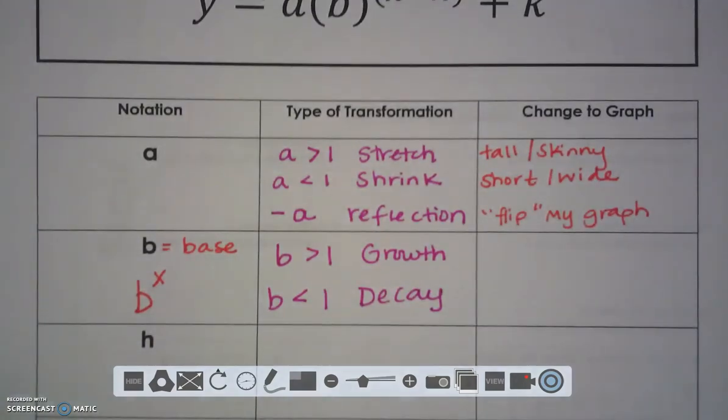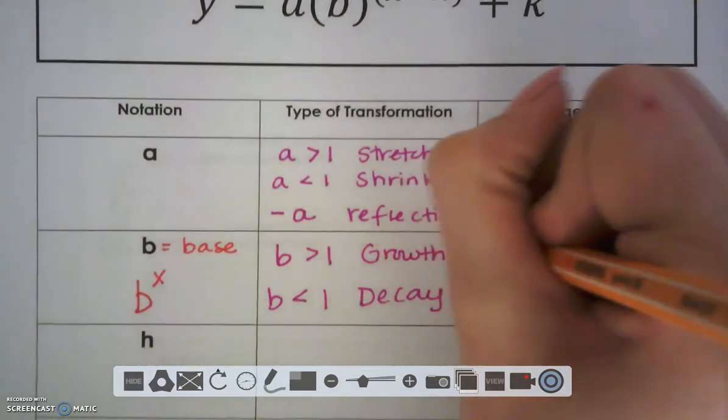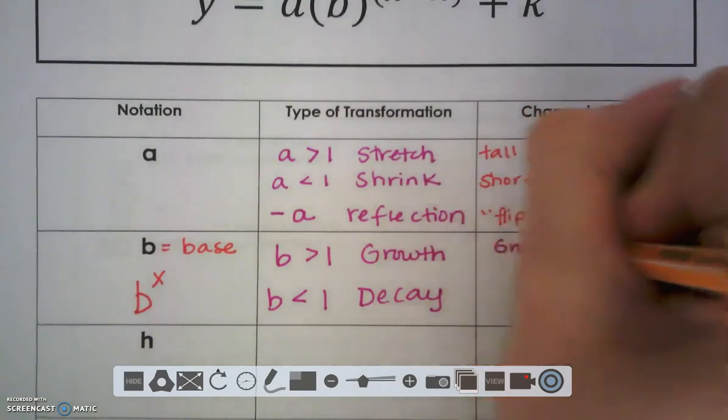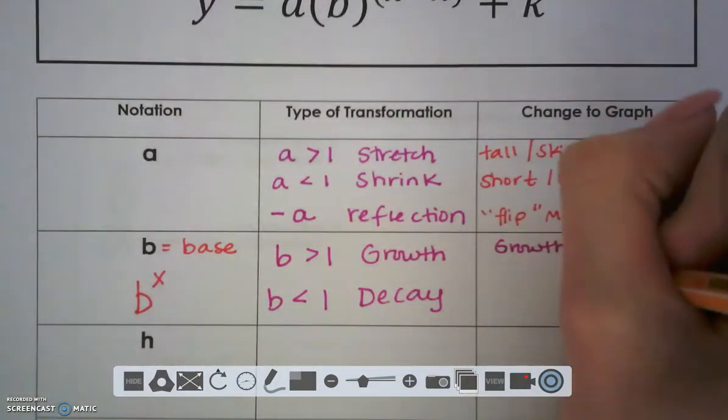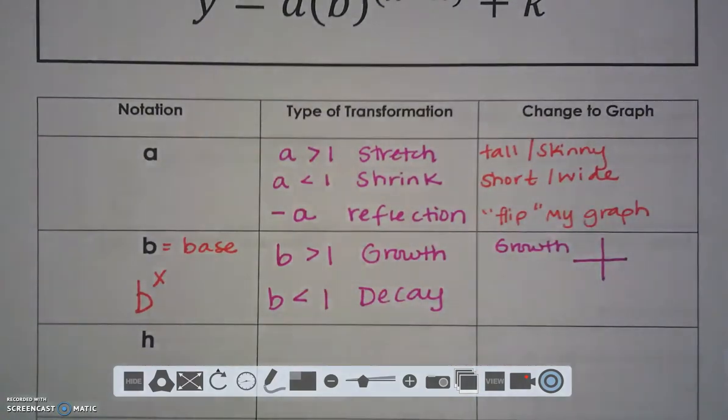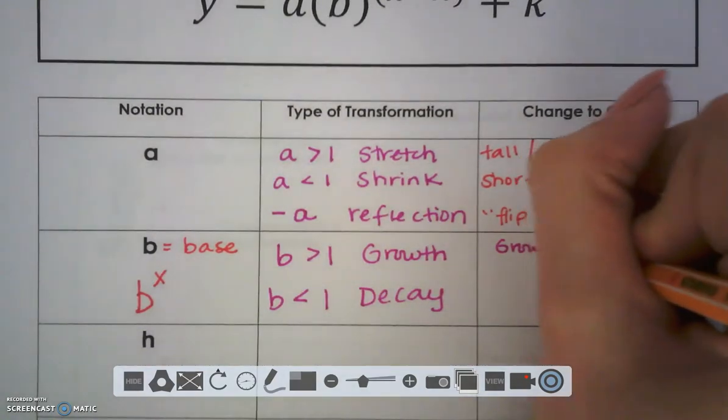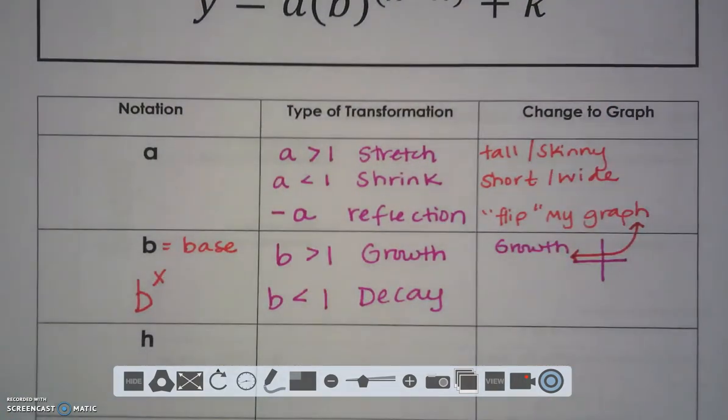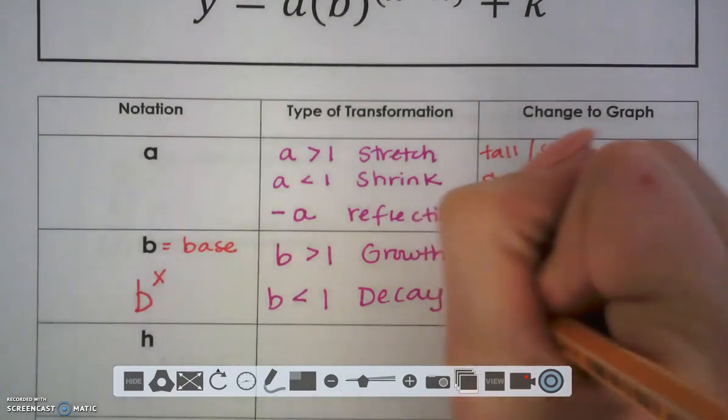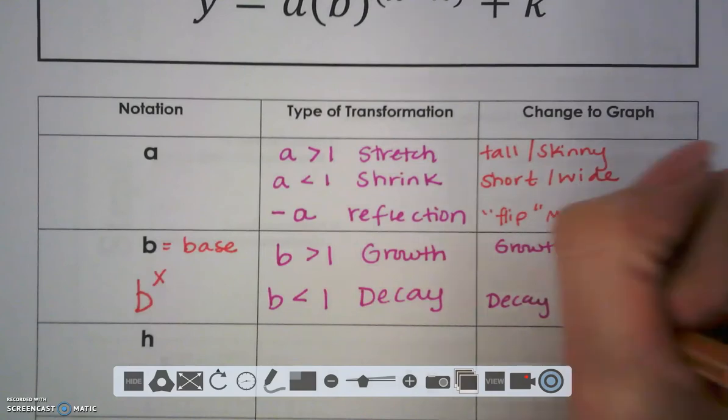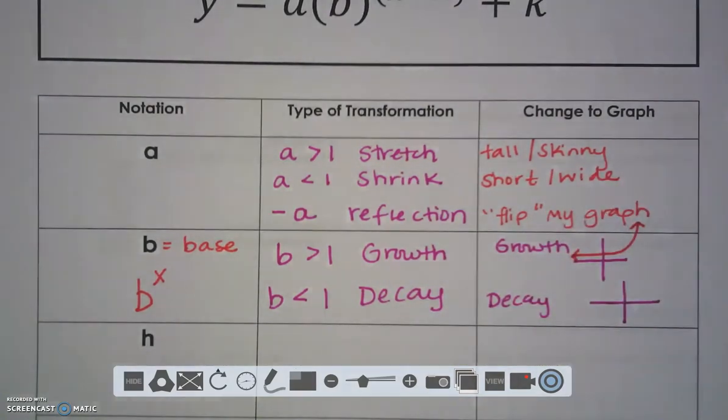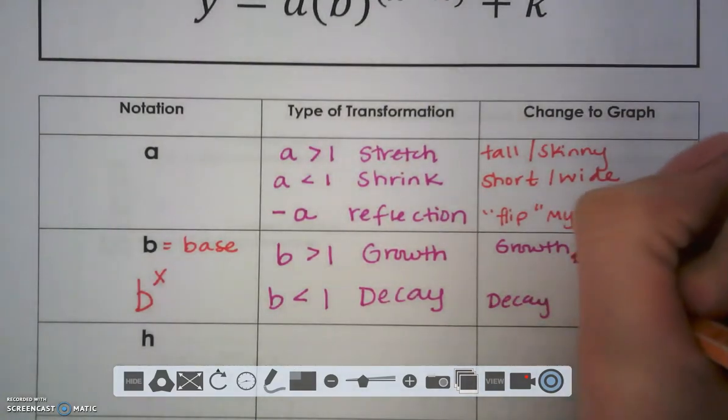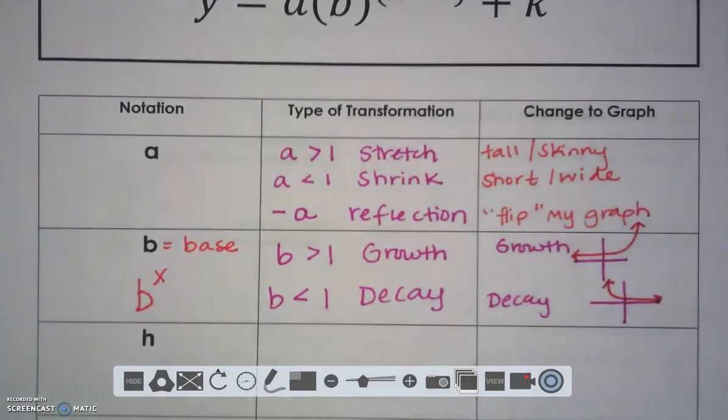Well, how does this change my graph? When I have a growth, my function is going to look like it has a positive slope. It's going to curve up in a positive direction. If I have a decay, my graph is going to look like it has a negative slope or it's falling just like some of our linear functions.